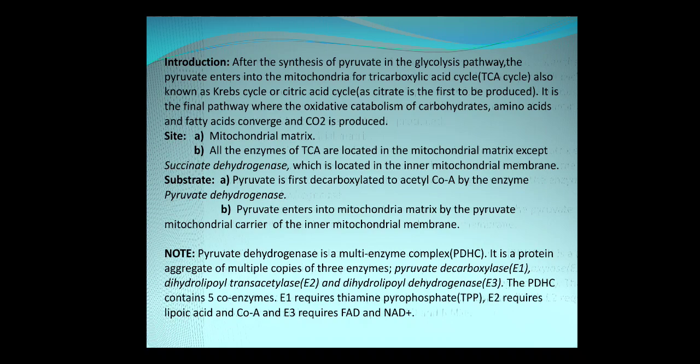The site of occurrence of the Krebs cycle is the mitochondrial matrix, and all the enzymes of the TCA cycle are located in the mitochondrial matrix except one enzyme — succinate dehydrogenase — which is located in the inner mitochondrial membrane. This is very important and comes in every competitive exam: which enzyme is not located in the mitochondrial matrix of the TCA cycle.